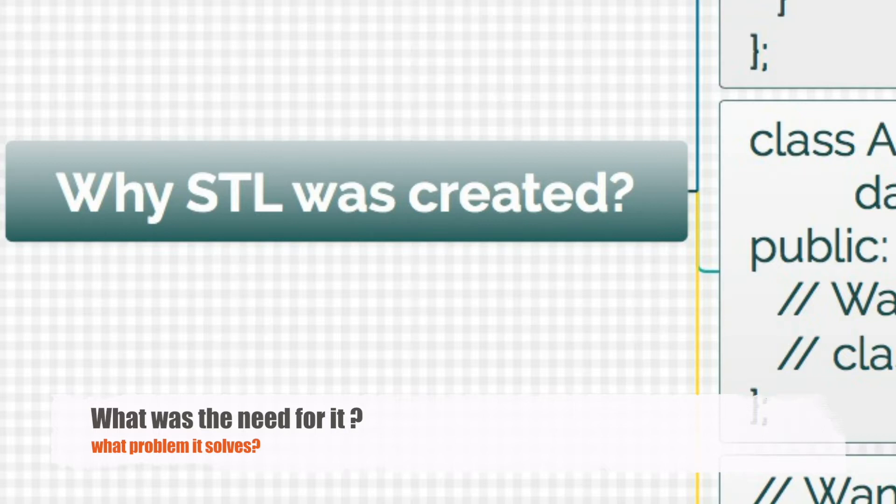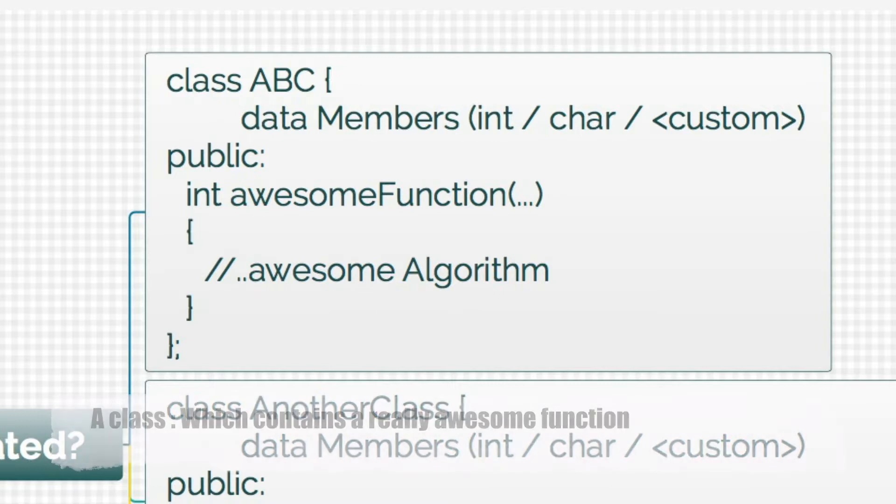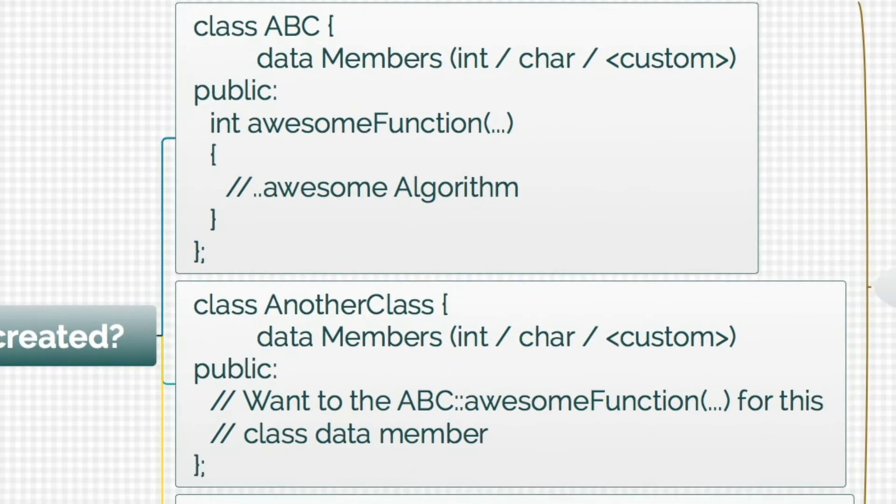Let's say for example if we have a class ABC which contains this really awesome function with an awesome algorithm to it, and let's say there is another class which wants to use this awesome function to make use of its awesome algorithm.